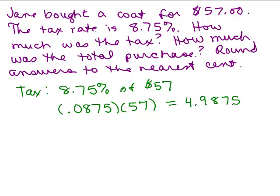And that will give us how much tax. Now when you put that in the calculator it comes out to 4.9875. But of course we're talking about money. So we want to change that to dollars and cents. So the question is, is it $4.98 or does it go up to $4.99?